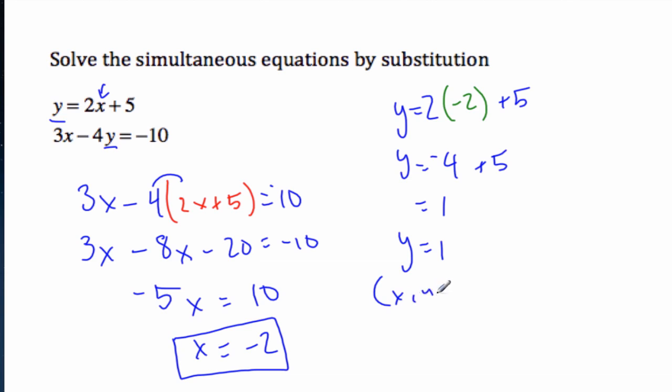And so my coordinate point, where these two equations are exactly equal, is when x is negative 2 and y is 1. And so if I check it, I can go 3 times negative 2,